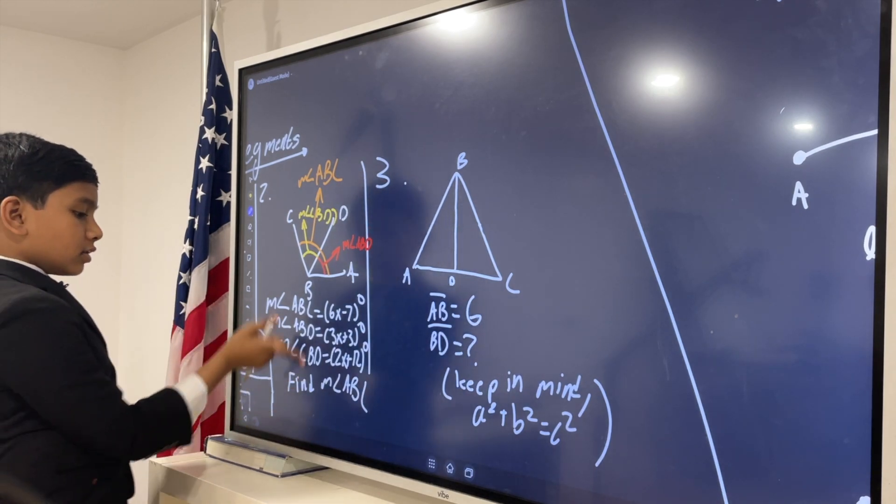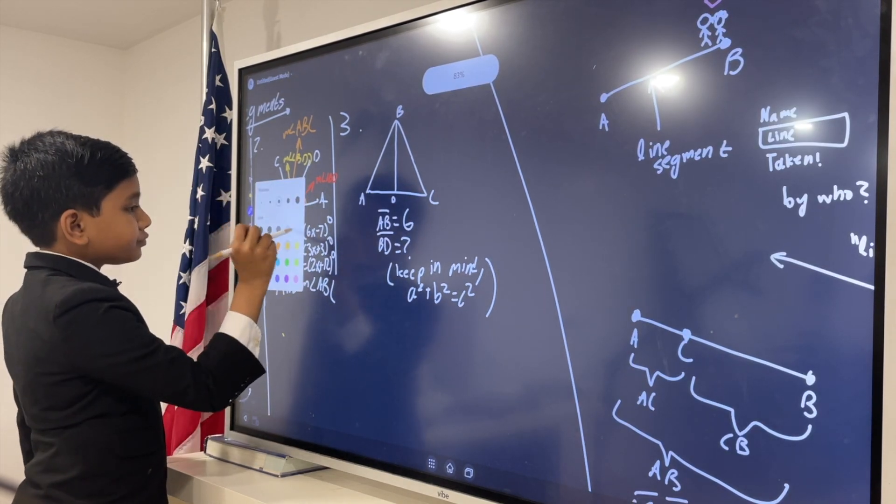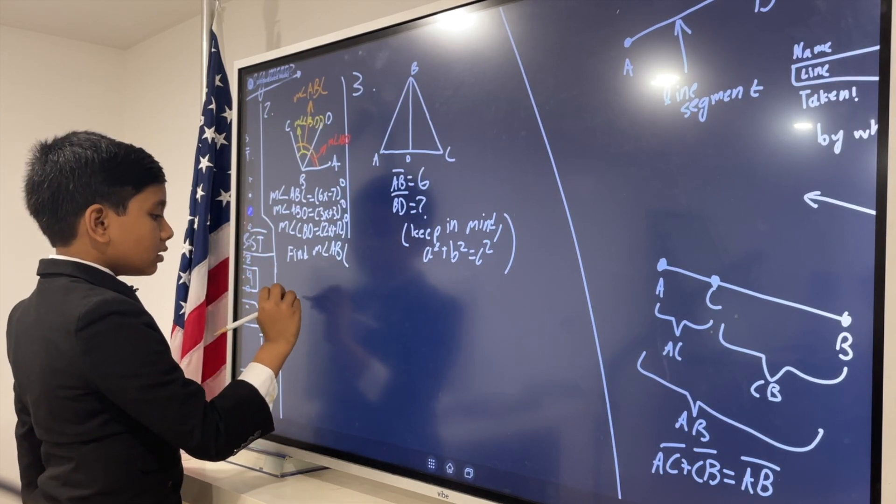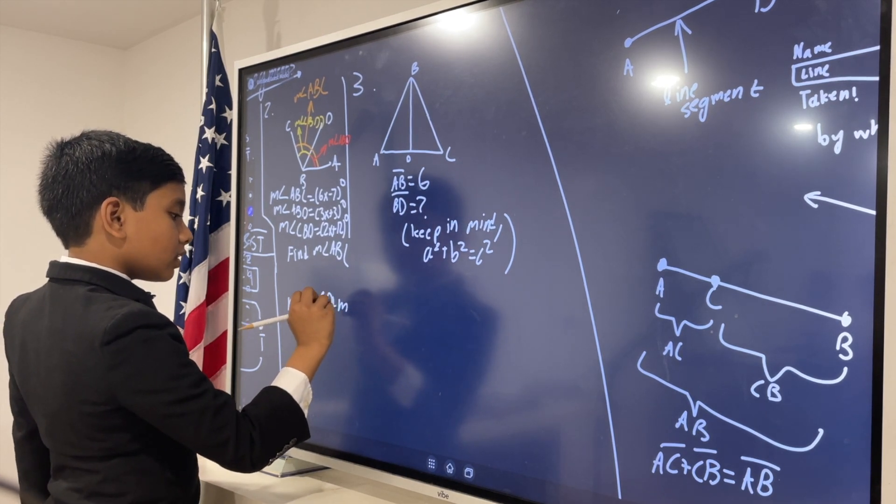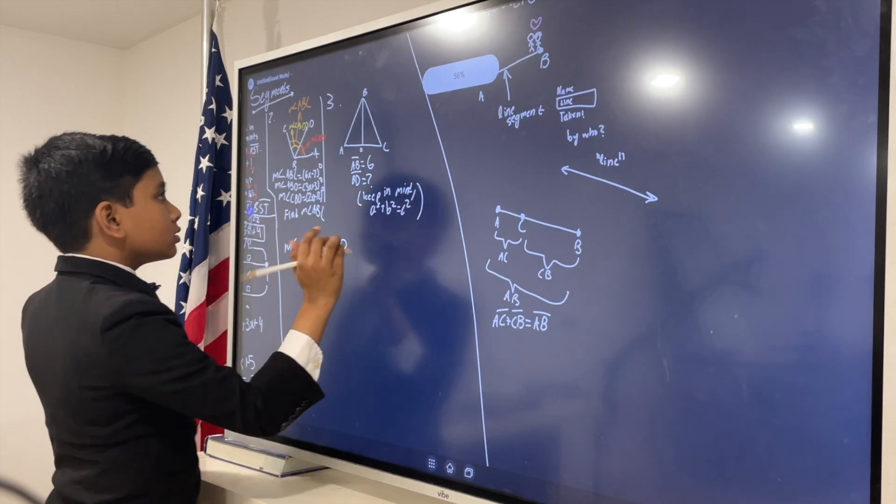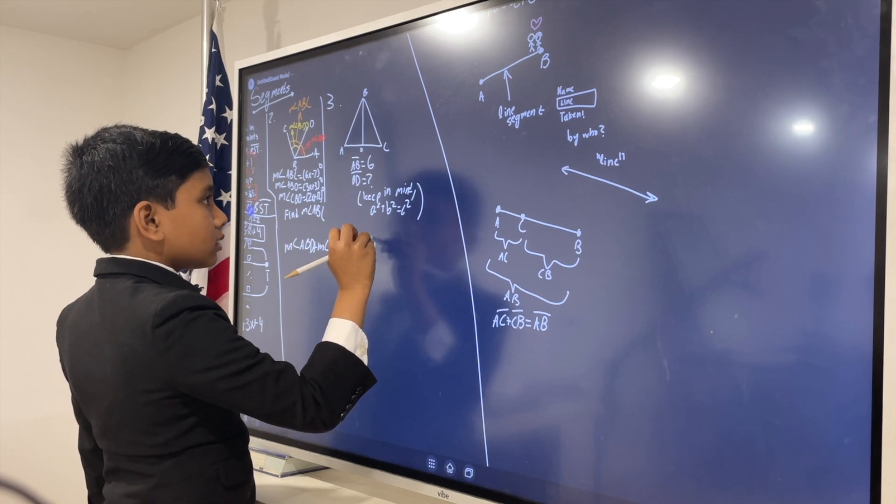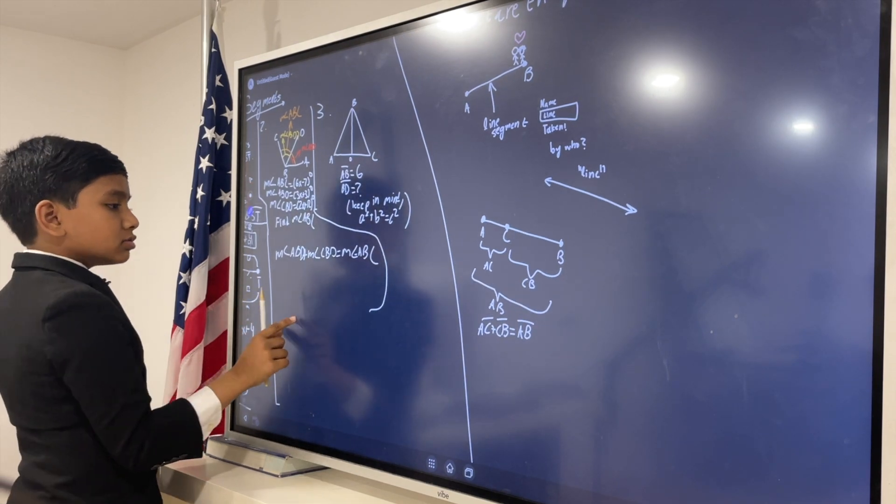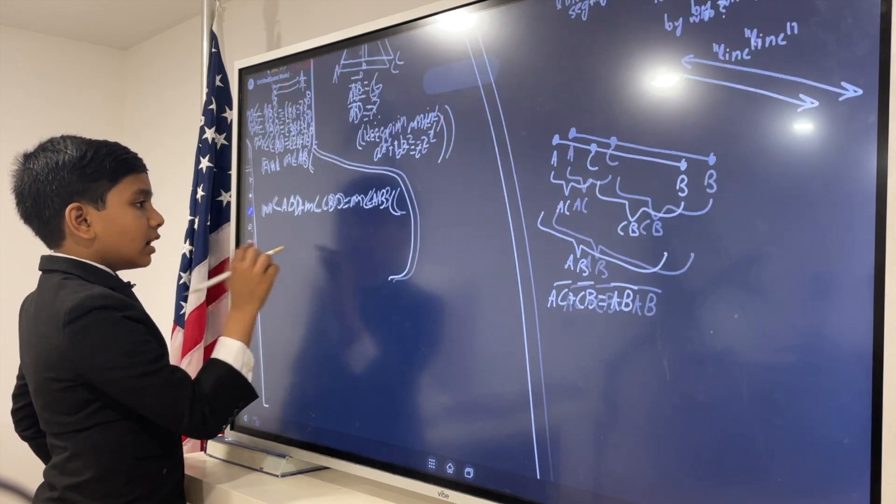So, what is angle ABD? Well, we know that angle ABD and angle CBD together must make up the entire angle. So, that must be equal to angle ABC.